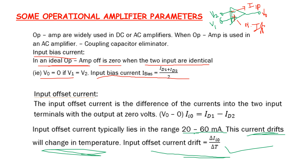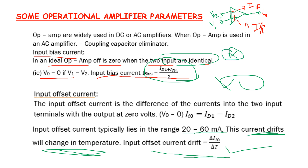To recap: in an ideal operational amplifier, the output offset is 0 when the two inputs are identical. This is a very important point and likely to appear as an exam question.